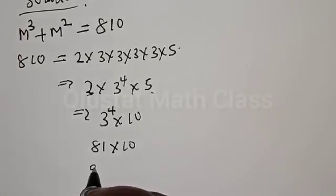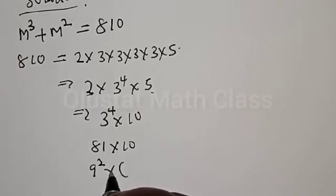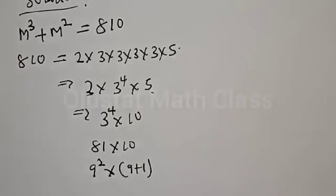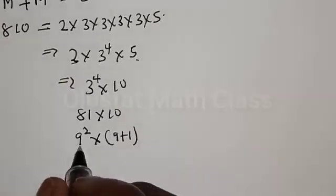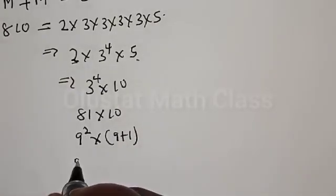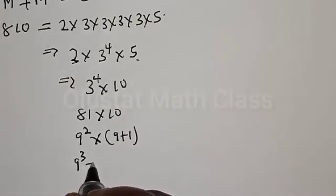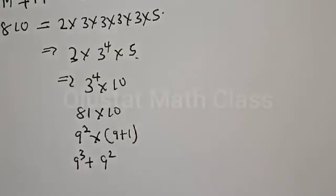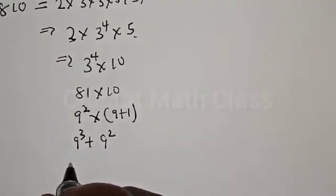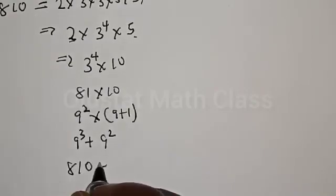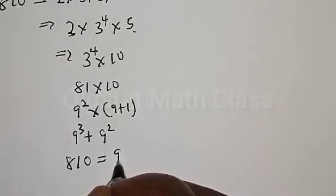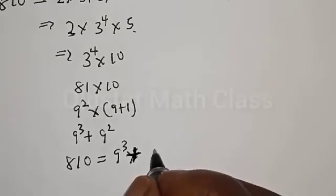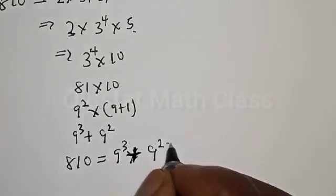And 81 is the same thing as 9 squared, then multiplied by 10 can be written as 9 plus 1. Let's open this bracket. We have 9 squared multiplied by 9, that is 9 cubed, plus 9 squared multiplied by 1, which is 9 squared. So therefore, 810 can be expressed as 9 cubed plus 9 squared.